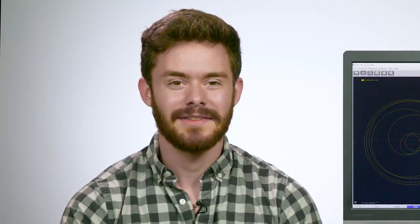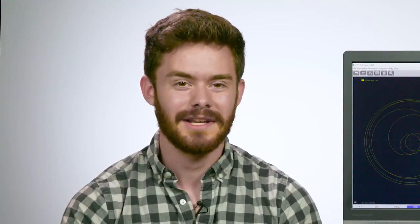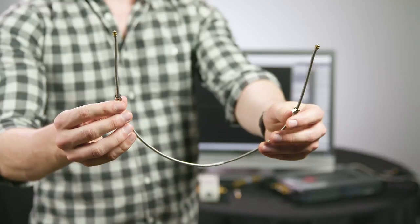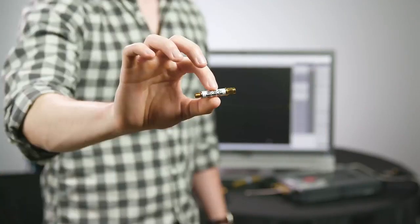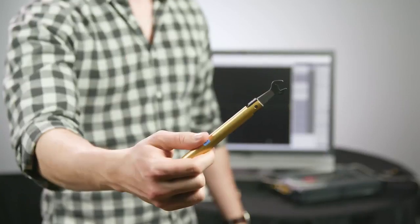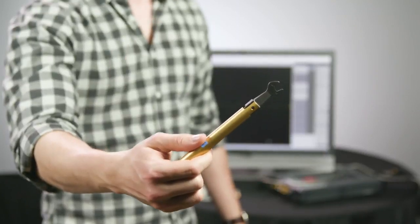The materials we'll be using in this video, aside from the instrument itself, are an E-cal module, a male-to-male SMA cable, a bandpass filter as our DUT, and a 3.5mm torque wrench.